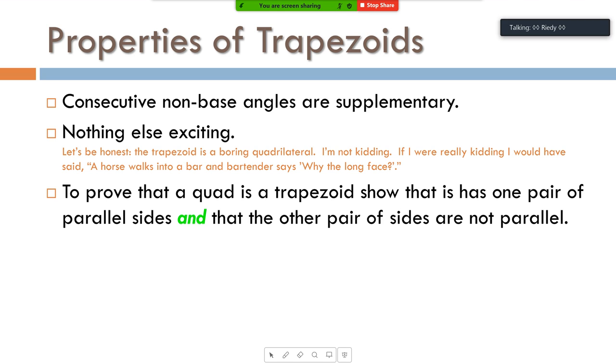If I give you a trapezoid and I want you to prove that it's a trapezoid, you only got to show two things. It would seem like you only need to show one thing, that there's a pair of parallel sides. But you also have to show that the other pair are not parallel. Because if you don't, it could be a parallelogram. And we want to get away from parallelograms with trapezoids. Okay. Questions?